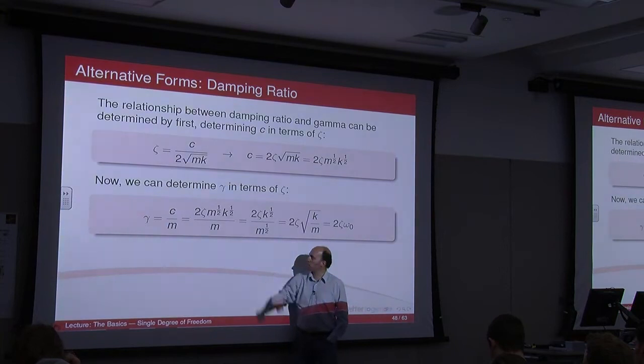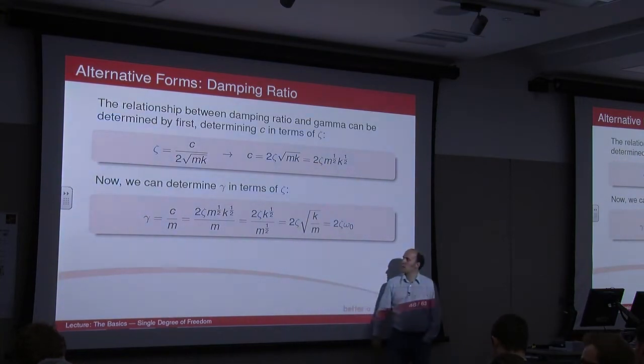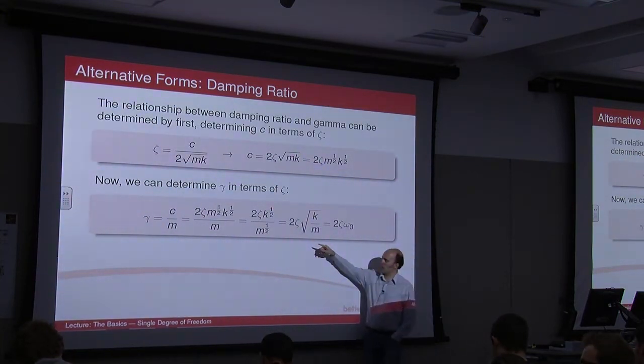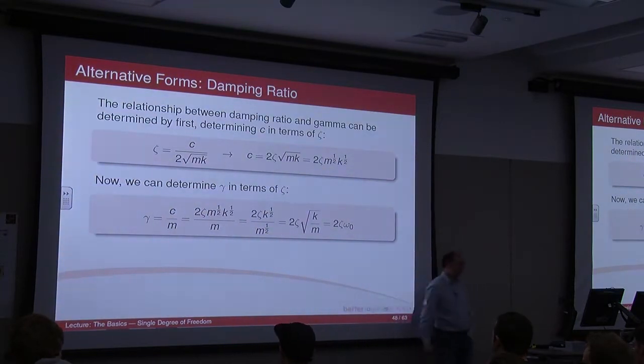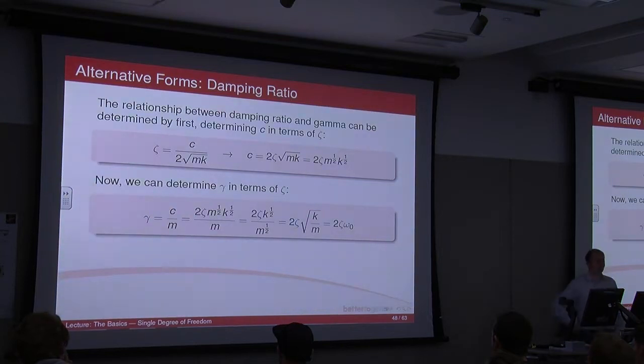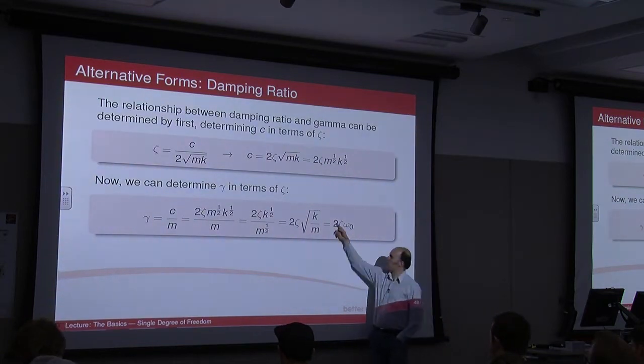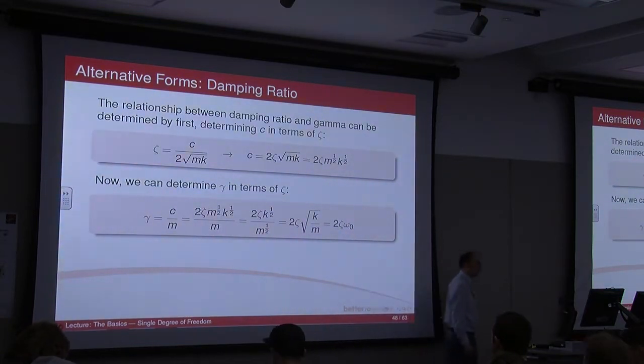We've got 2 zeta m to the half k to the half over m, where m to the half over m is 1 over m to the half, so that's why that drops down. And you can see we end up with 2 zeta root k upon m, which is 2 zeta omega naught. And so wherever we saw gamma in that equation, we could replace with 2 zeta omega naught, which is the alternative form.